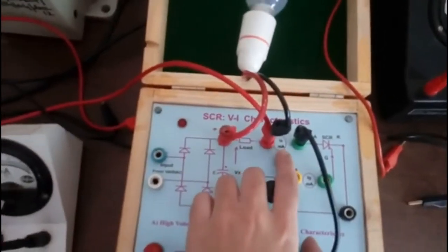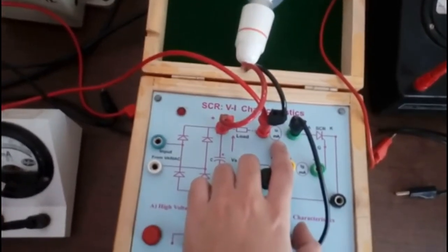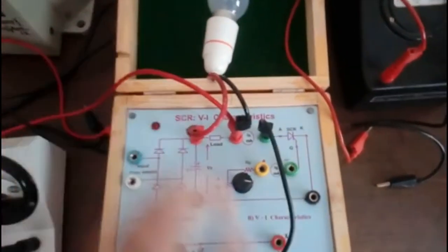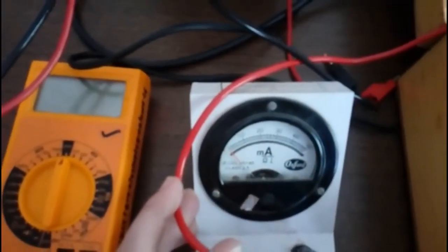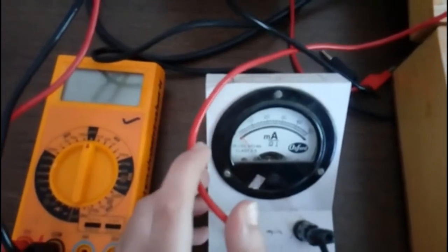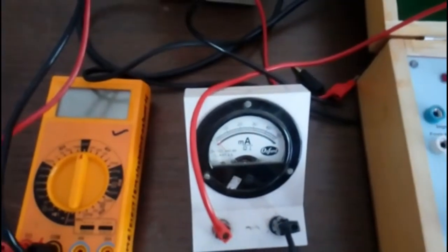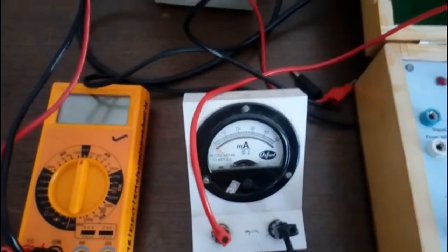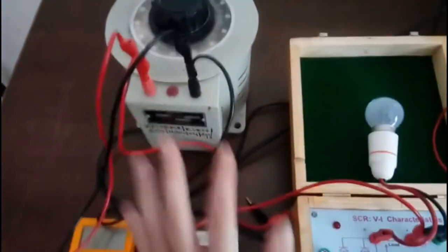Here I have to connect an ammeter of 0 to 50 amp, and this is to measure the anode current. This is my ammeter connection. Look at the rating, it is 0 to 50 amps.